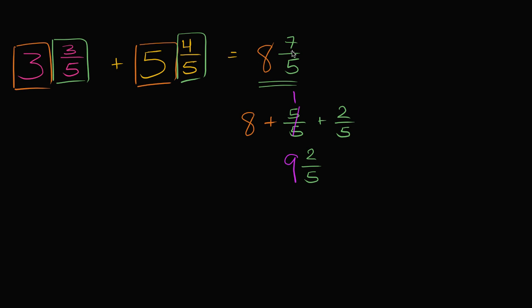Eight and seven-fifths, because five-fifths is a whole, is the same thing as nine and two-fifths. So if I wanted to write this in a clearer way, I would say this is nine and two-fifths. Three and three-fifths plus five and four-fifths is nine and two-fifths.